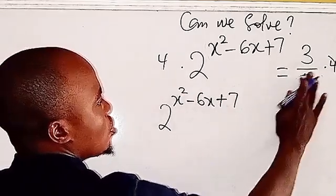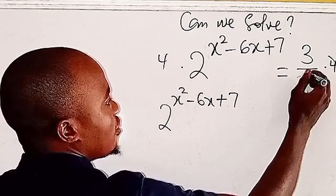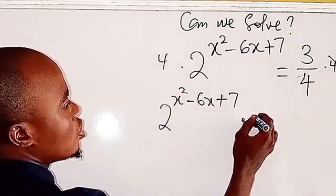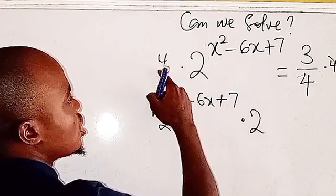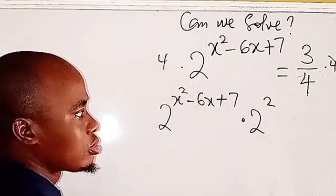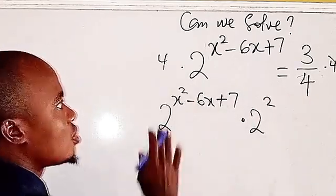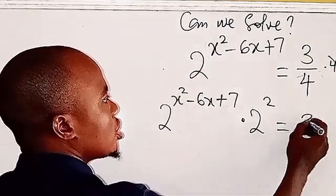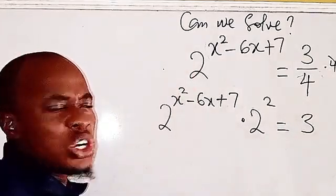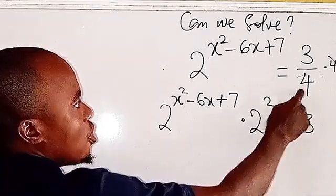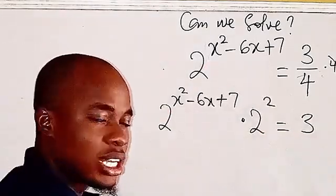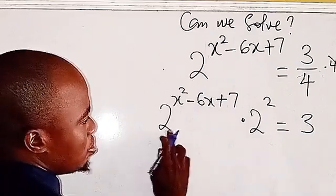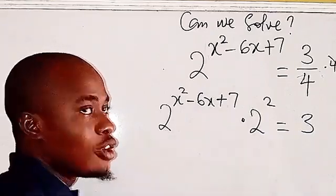After cancellation, the four on the right becomes one, and four is the same as two squared. So by cross-multiplication we get two to the power of (2s squared minus six s plus seven) times two squared equals three. From the law of indices, we combine the powers together.